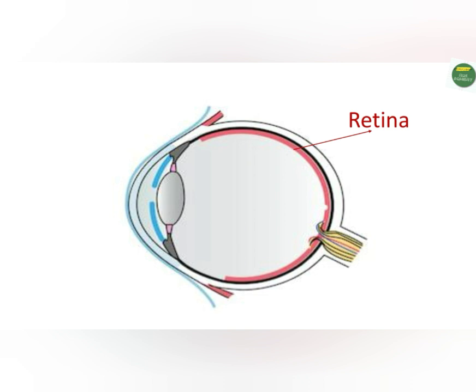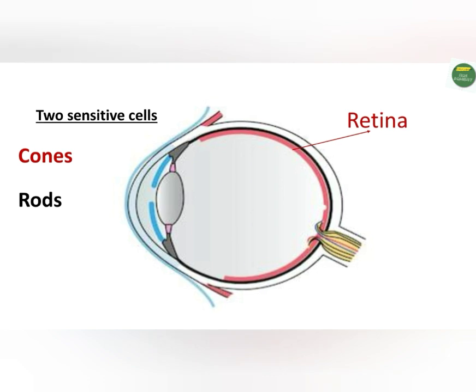The retina, indicated by the red arrow, contains two types of sensitive cells: the cones and the rods. The cones are cells active during daytime or bright light and enable the eye to distinguish between colors. The rods enable the eye to see during nighttime. The portion of the retina with the highest concentration of cones is called the fovea, where the image formed is very detailed and clear.